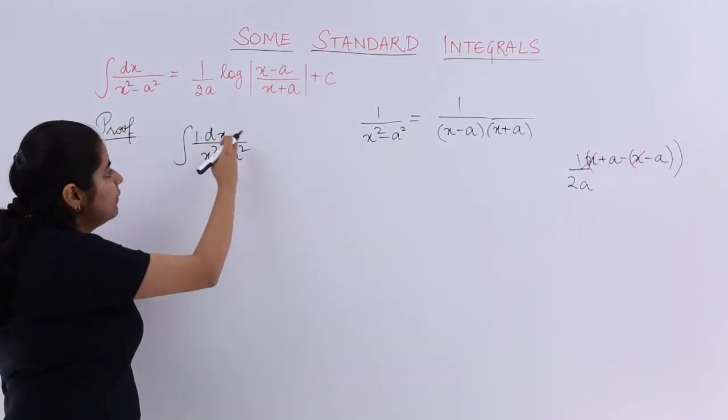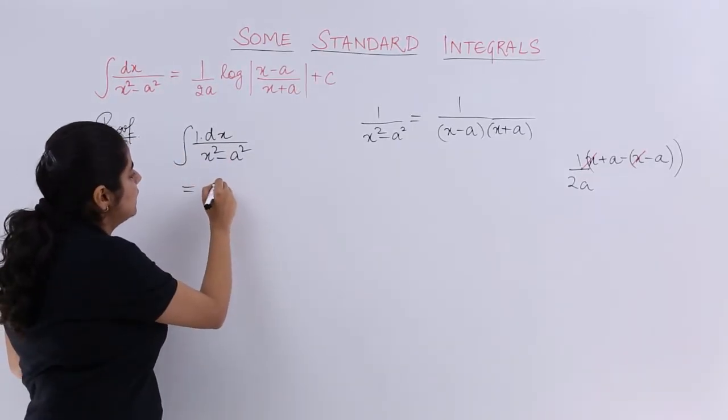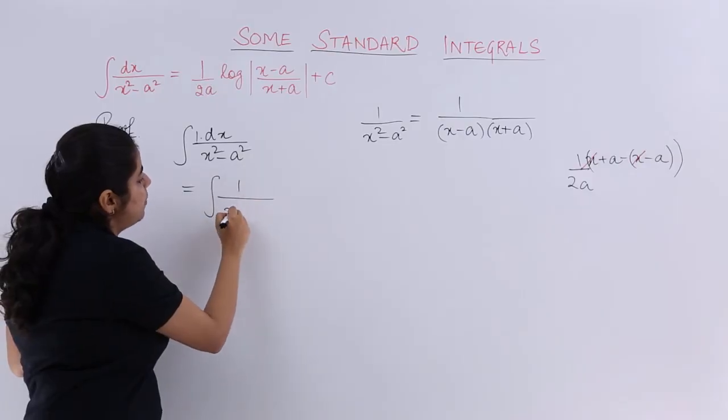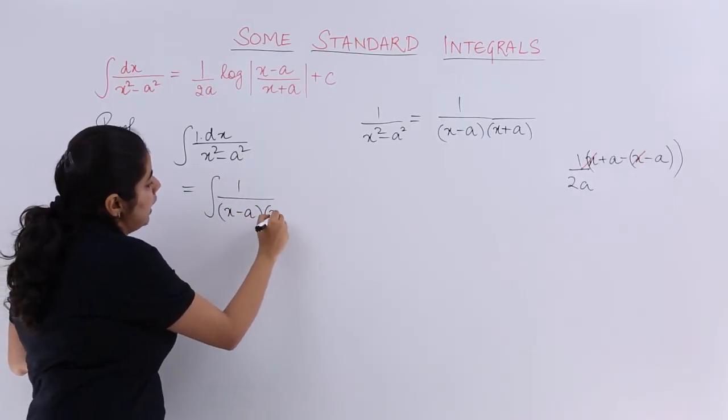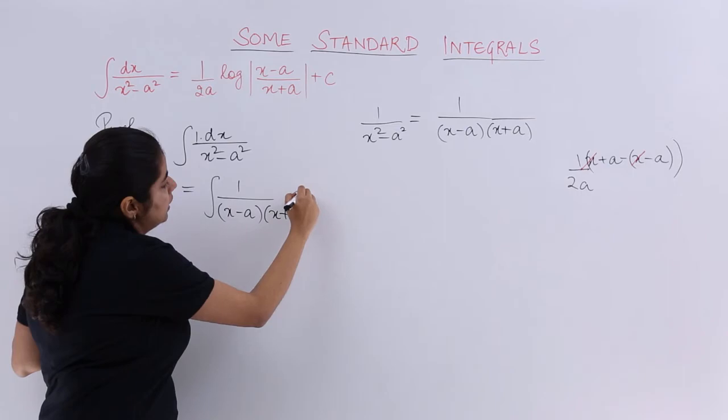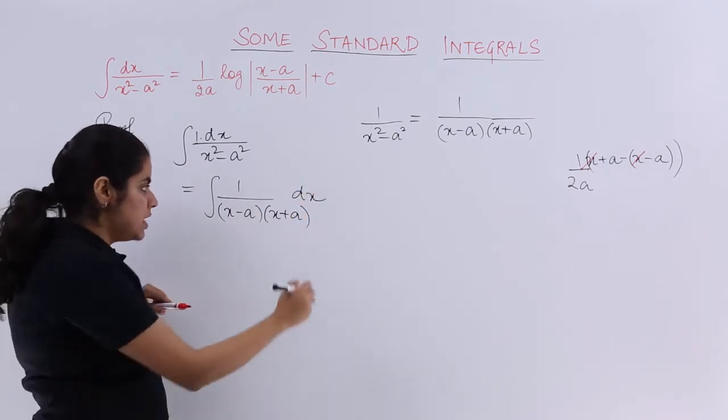I know that I have to evaluate this integral. What I do? I just simply write it as integration 1 upon x minus a, x plus a, and here it is nothing but dx.